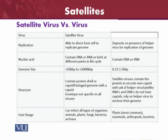The host range is different. Simple viruses have a wide host range and can infect all types of organisms including animals, plants, fungi, bacteria, and archaea. Satellite viruses, on the other hand, have a more limited host range — mostly some plants, though they can also be present in mammals, arthropods, and some bacteria.